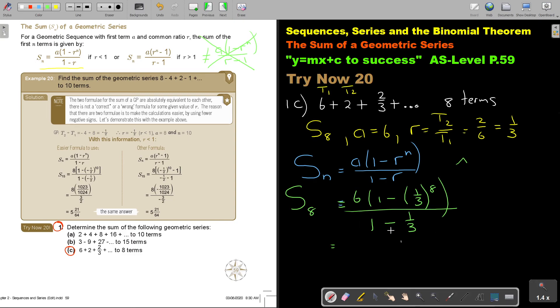Or just divide by 2 over 3. But the final answer will be 8 and 80 over 81. That will be the sum of the first 8 terms.